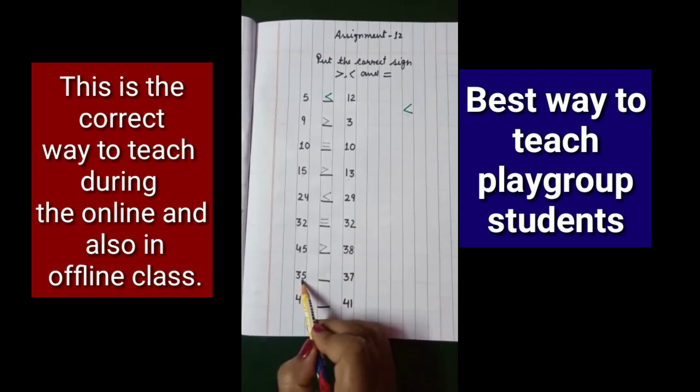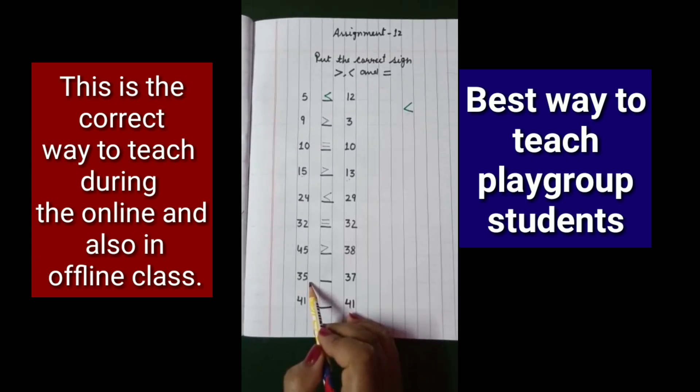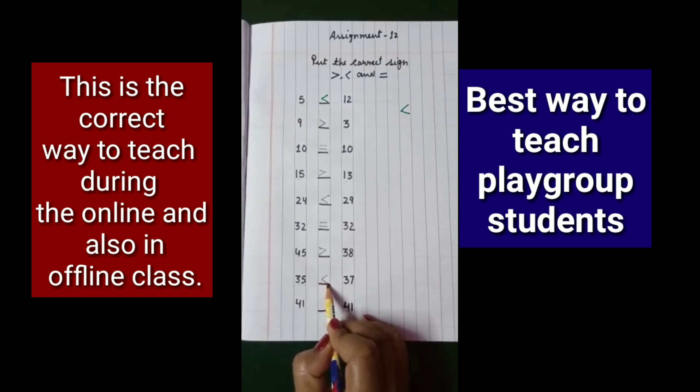The next one, 35 and 37. The smaller one is 35. So the tail will be towards 35 and the mouth will open towards 37.